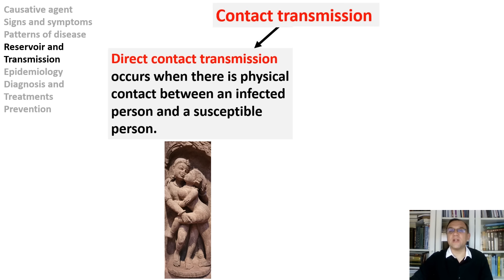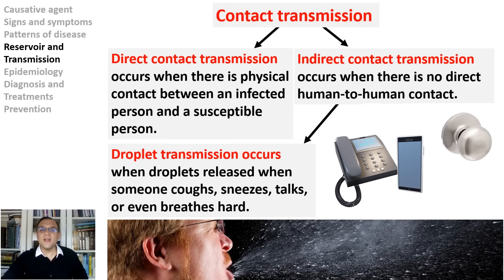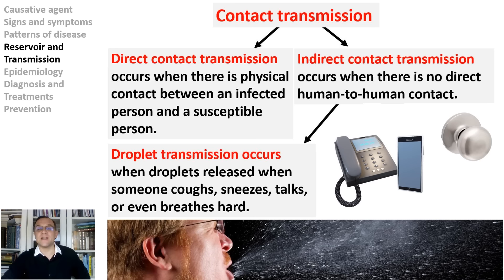Direct contact infections spread when disease-causing microorganisms pass from an infected person to a healthy person via direct physical contact with blood or body fluids. Examples of direct contact are touching, kissing, sexual contact, contact with oral secretions, or contact with body lesions. Indirect contact transmission occurs when there is no direct human-to-human contact — an infected person sneezes or coughs, sending infectious droplets into the air. If a healthy person inhales the droplets, or if contaminated droplets land in their eyes, nose, or mouth, they risk becoming ill. Droplets generally travel three to six feet and land on surfaces such as tables, doorknobs, and phones.